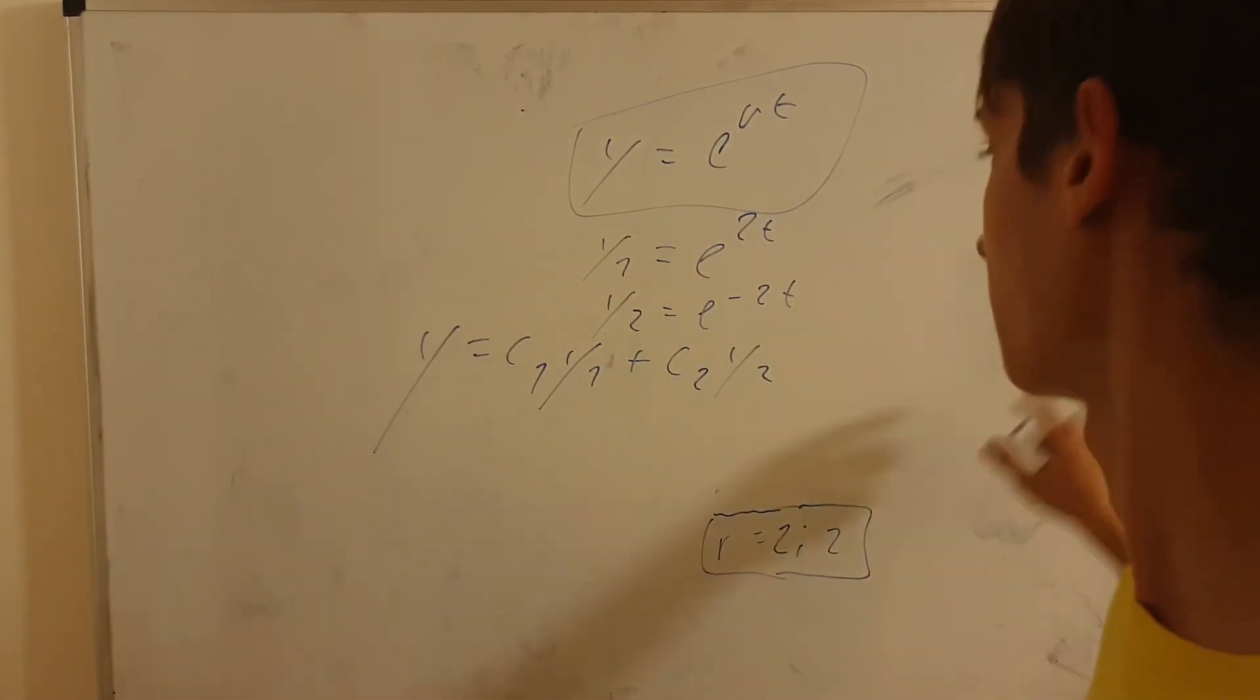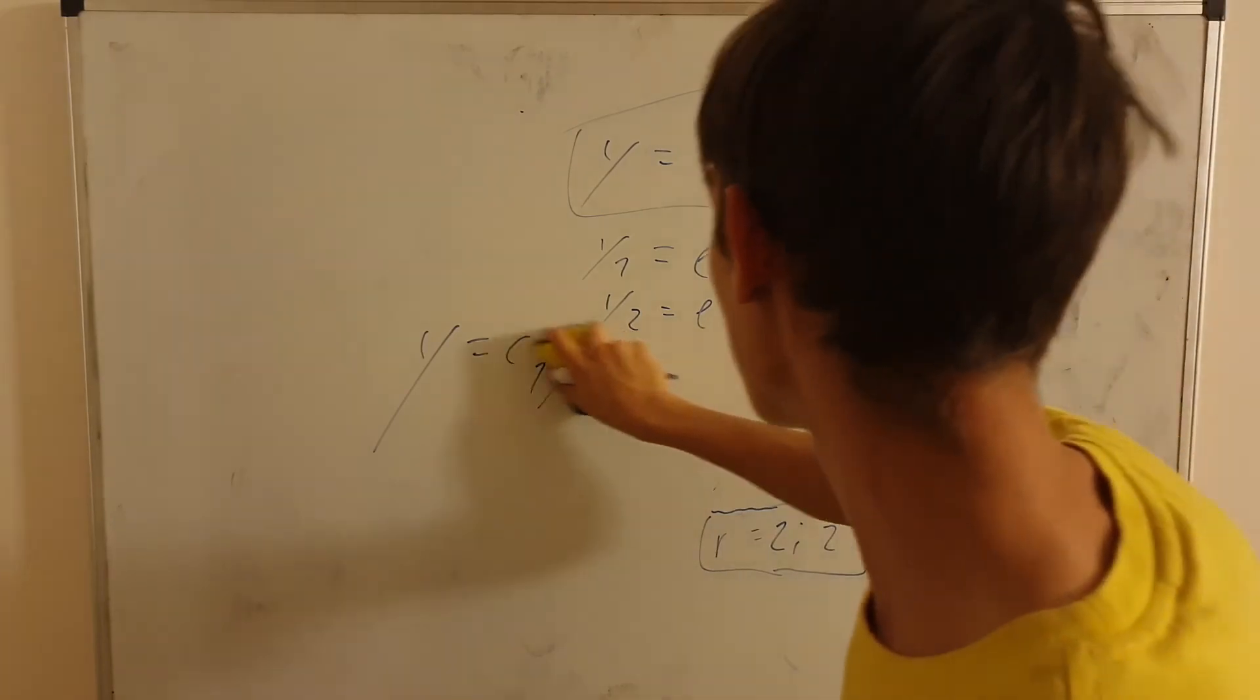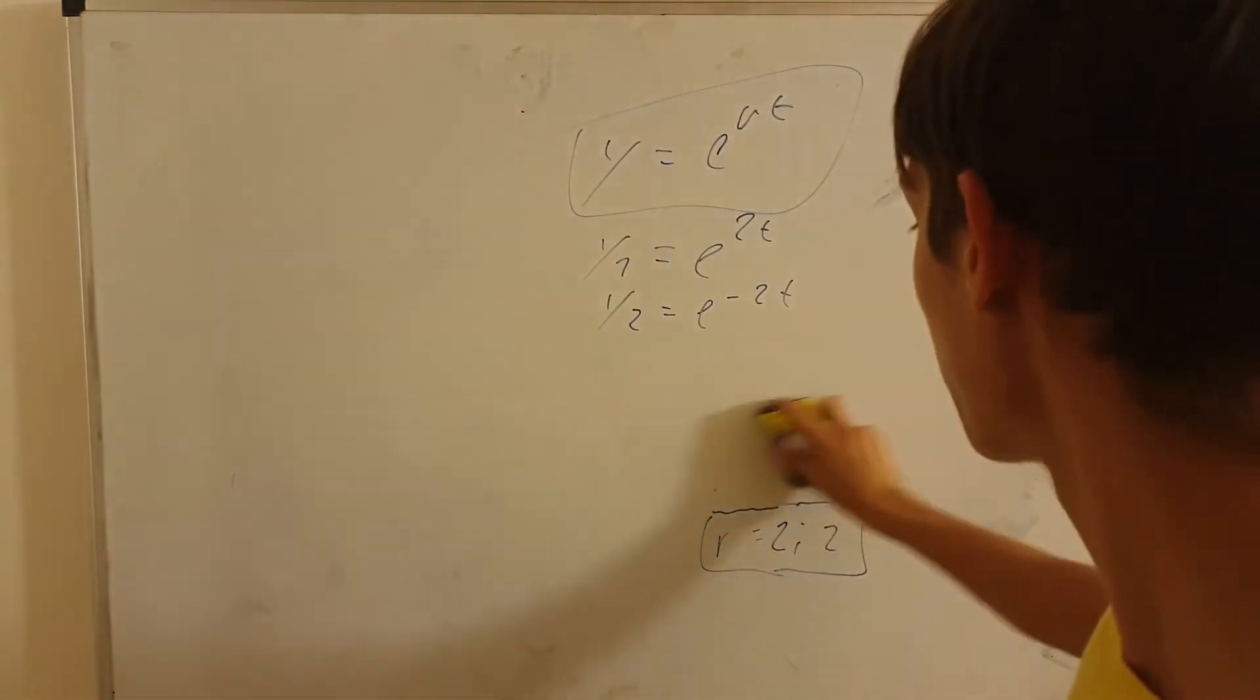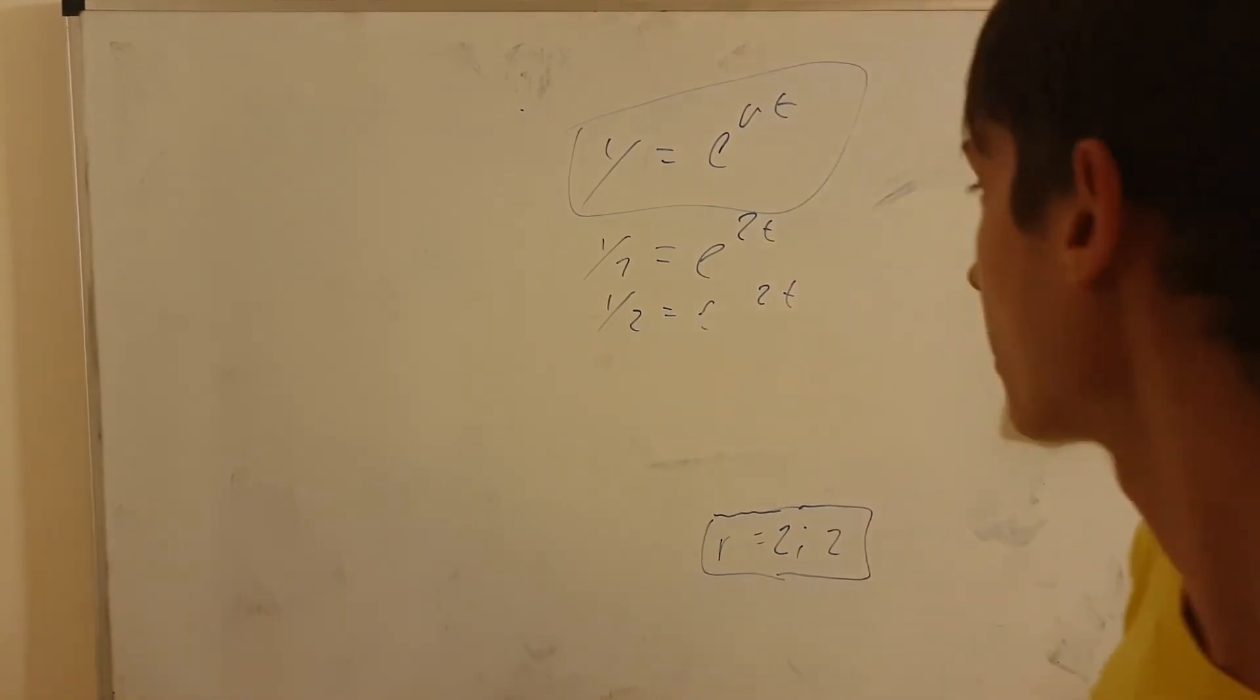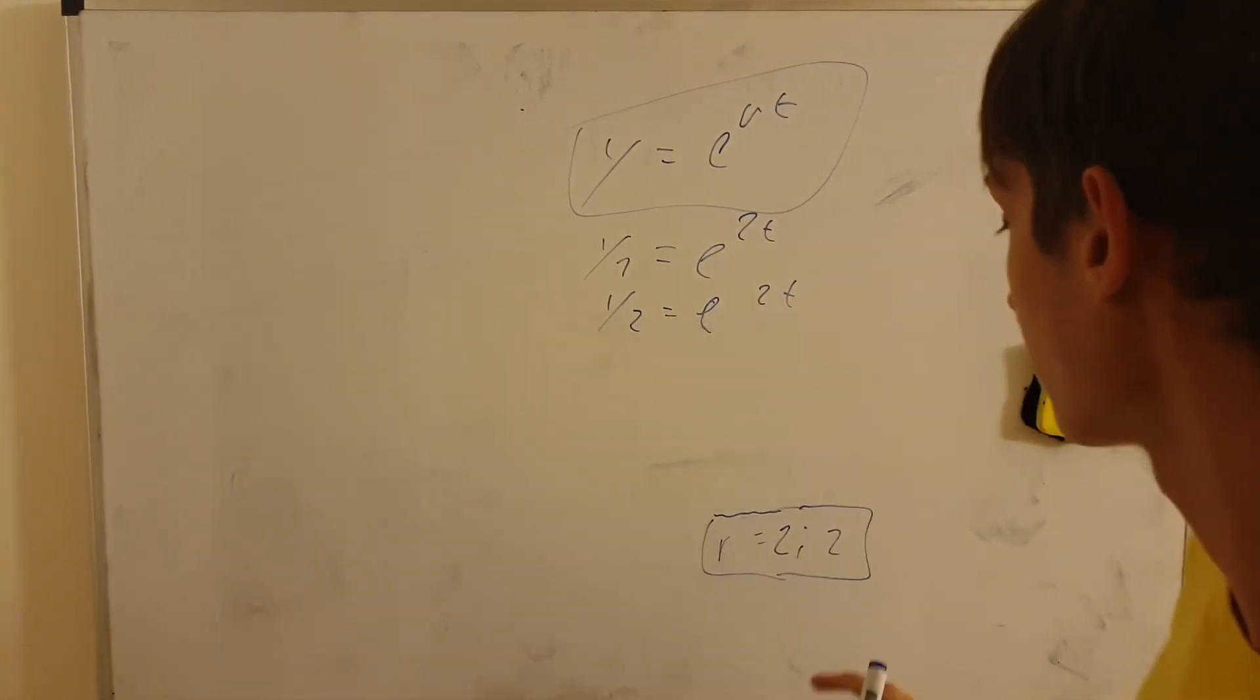y1 being, for example, this and y2 being, for example, this. In this case though, there's a repeated root. So what you would get is, there's not minus 2t in the second case, there again is 2t.